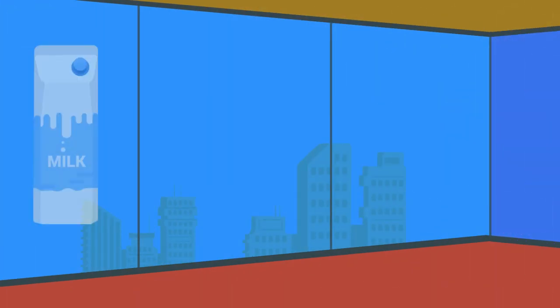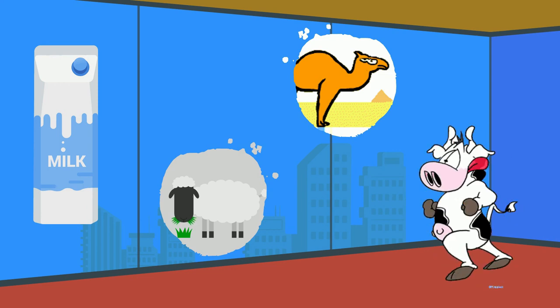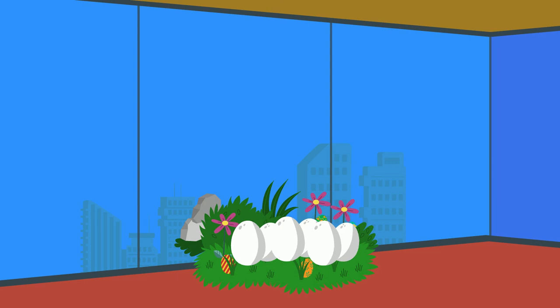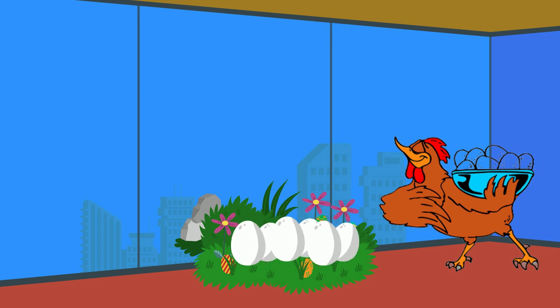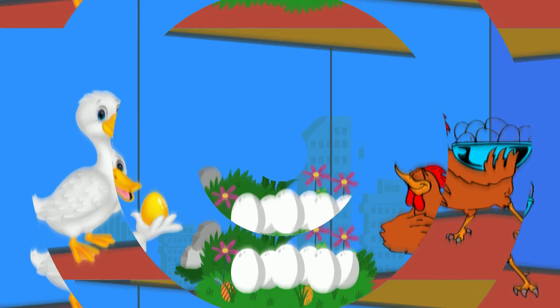We get meat and milk from our animals such as cows, goats, and camels. We get eggs from some animals such as chicken and ducks.